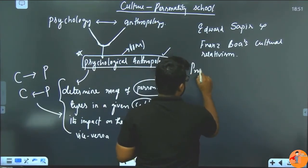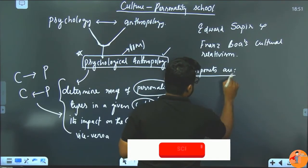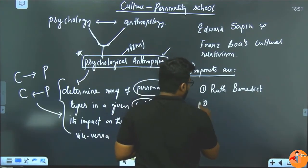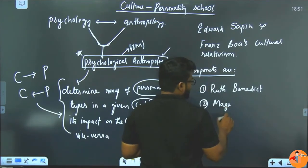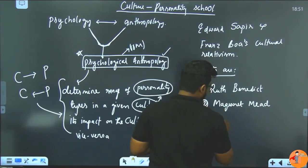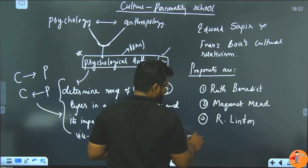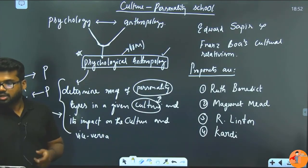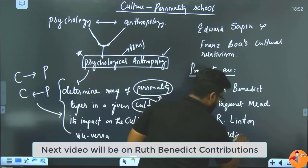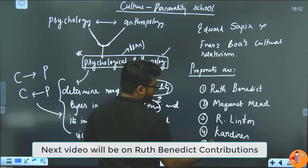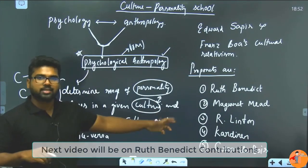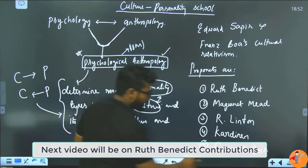Important Proponents are: Ruth Benedict, she was student of Franz Boas. Margaret Mead, she was also. Ralph Linton. Kardiner. And - please ensure that you don't make any spelling mistakes with individuals' names - Kardiner.